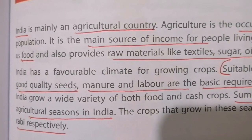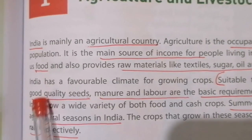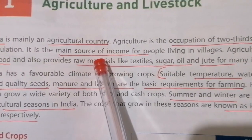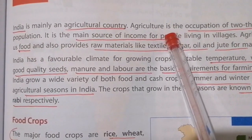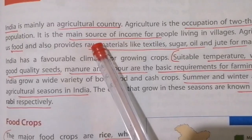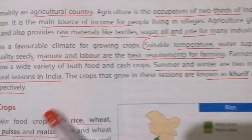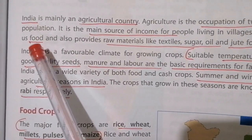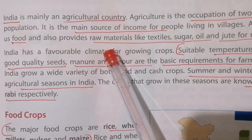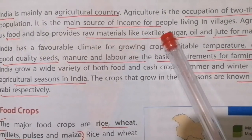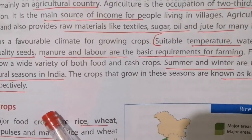India is mainly an agricultural country. The main occupation of two-thirds of Indian people is agriculture, and it is the main source of income for people in the villages. So what does agriculture give us? Agriculture gives us food and it also provides raw materials.